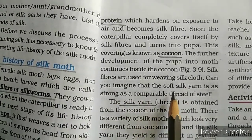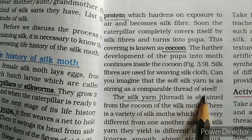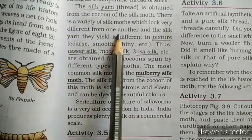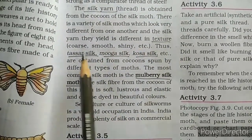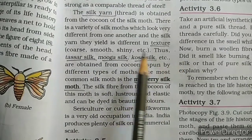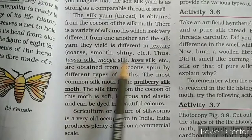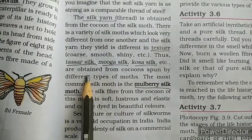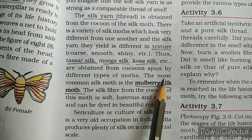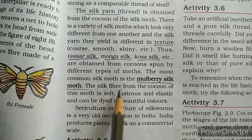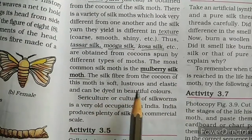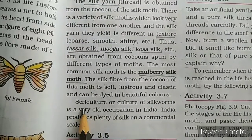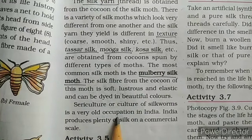The further development of the pupa into moth continues inside the cocoon. Silk fibers are used for weaving silk cloth. The soft silk yarn is as strong as a comparable thread of steel. There are a variety of silk moths, and the silk yarn they yield differs in texture — coarse, smooth, shiny, etc. Thus tassar silk, mooga silk, kosa silk, etc. are different types of silk obtained from cocoons spun by different types of moths. The most common silk moth is the mulberry silk moth, whose silk fiber is soft, lustrous, and elastic, and can be dyed in beautiful colors.